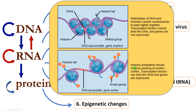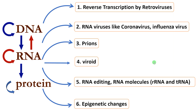The second epigenetic example is histone acetylation. Histone acetylation results in loose packing of nucleosomes so that transcription factors can bind, causing gene expression. These are called epigenetic changes — there is no change in the DNA sequence, but gene expression is influenced without any change in the coded DNA sequence. These are the exceptions to the central dogma of molecular biology, as proposed by Francis Crick.